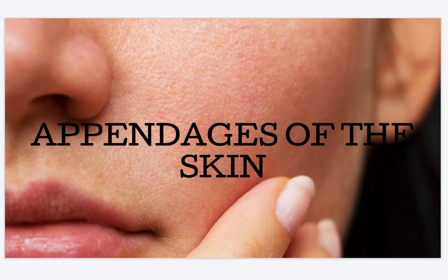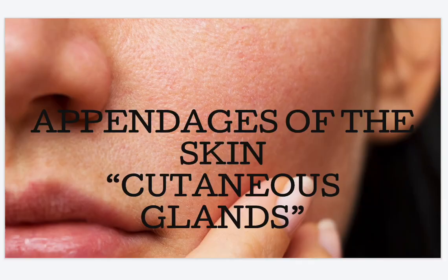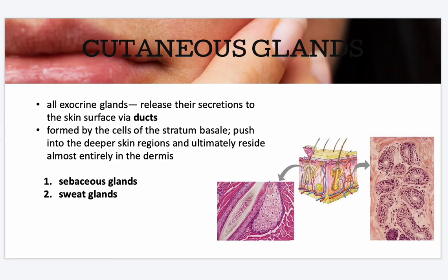The appendages of the skin arise from the epidermis and include your cutaneous glands, hair and nail follicles, and your nails. They all play a unique role in maintaining body homeostasis. All cutaneous glands are exocrine glands that release their secretions to the skin surface via ducts. They form from the cells of the stratum basale, push into the deeper skin regions, and ultimately reside almost entirely in the dermis.